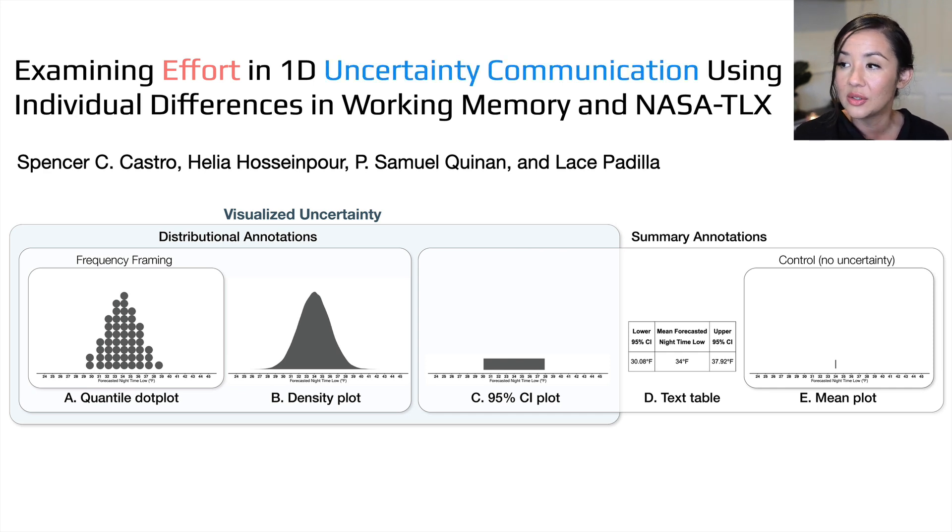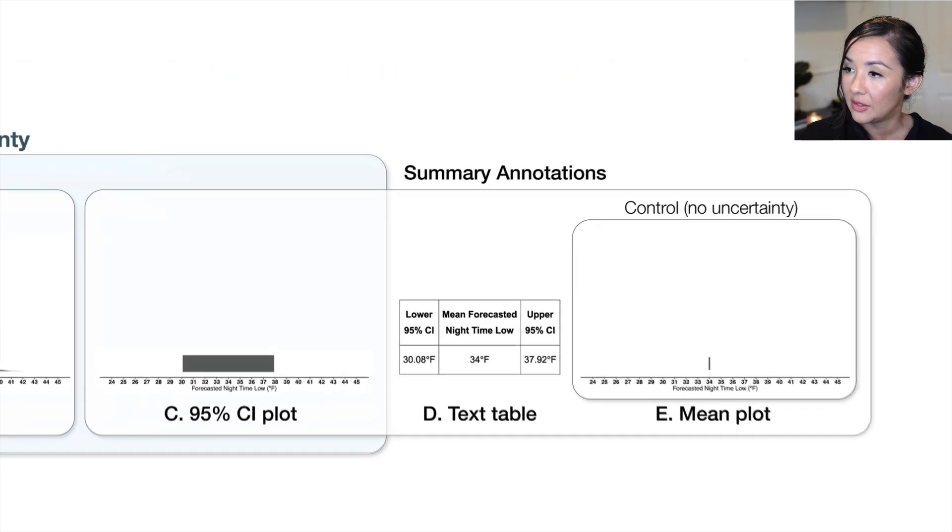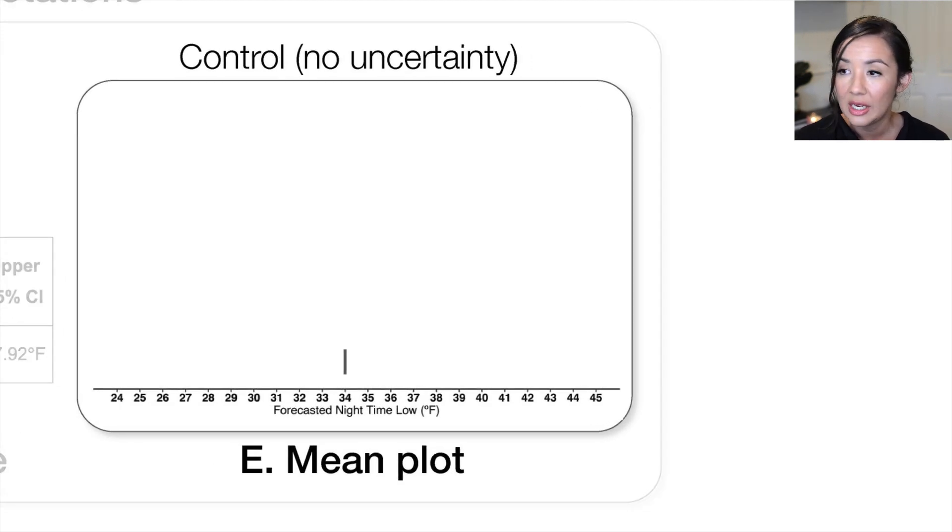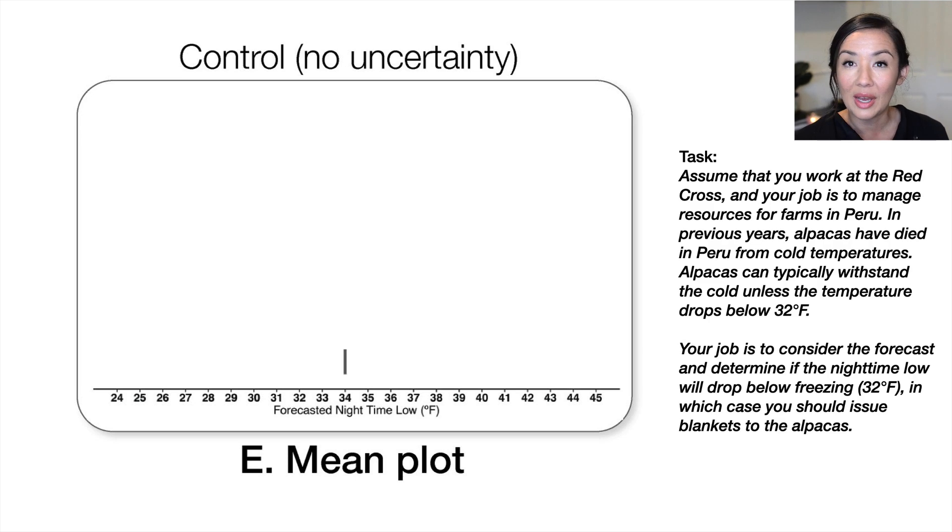We're focusing on uncertainty communication, and we have these five different communication techniques. To begin, let's first talk about our control condition. Here we have a forecasted nighttime low visualization that just shows the mean. The actual task we had people do is we had them assume the role of a Red Cross worker, and they had to determine when the temperature will drop below 32 degrees. If it does drop below 32 degrees Fahrenheit, then they should issue aid to the alpaca farmers.